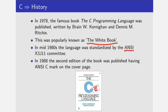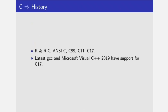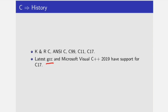In 1988, the second edition of the book was published having the ANSI C mark on its cover page — you can see it here. We have different versions of C language: first one was popularly known as K&R C, for Kernighan and Ritchie, followed by ANSI C, then C99, C11, and C17. The latest GCC and Visual C++ 2019 have support for C17.